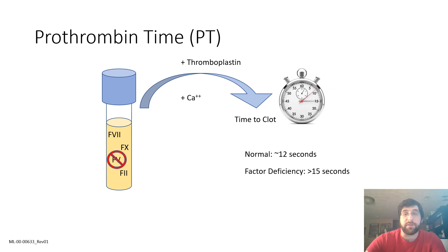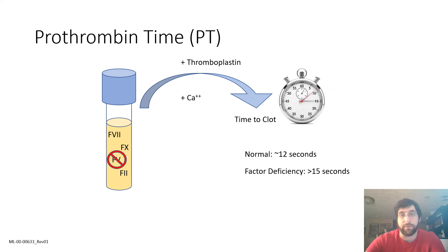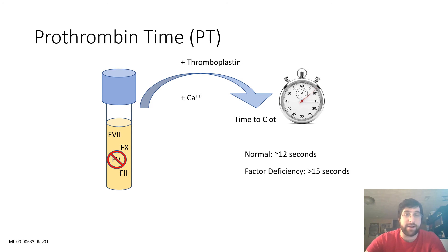A PT greater than this range indicates deficiency in one of the factors in this pathway — factor 7, 5, 10, or factor 2 prothrombin. The PT test is useful for measuring liver damage and dysfunction, vitamin K status, and warfarin levels via specialized analysis known as the INR.